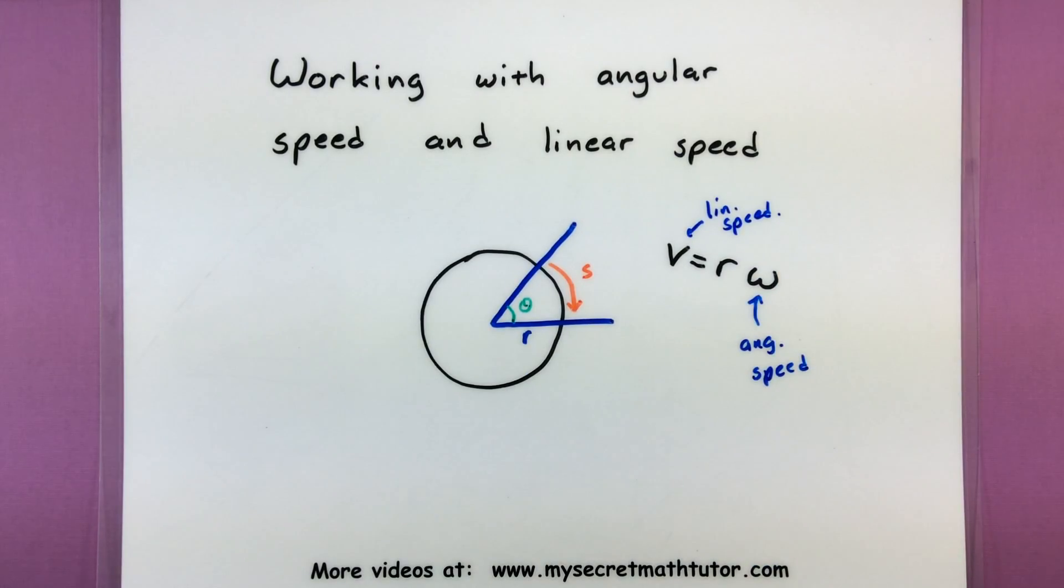All right, so we'll see a few examples where we essentially just use this to either find angular or linear speed, and near the end watch for a kind of a tricky problem where we'll have to also do a lot of conversion in our units to make sure we get the proper speed described in the way we want. All right let's go ahead and start this.